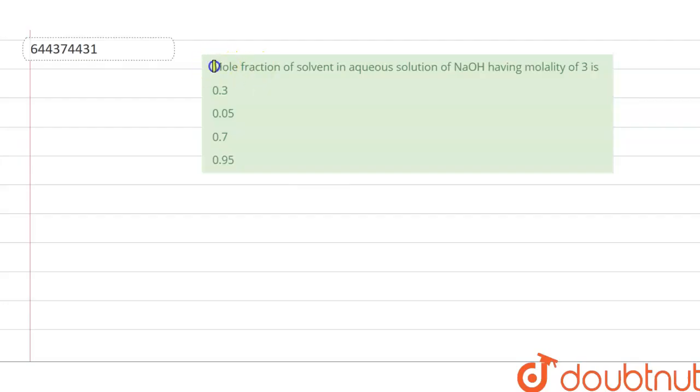The question is, we have to find out or calculate the mole fraction of solvent in aqueous solution of sodium hydroxide having molality of 3. Four options are given.